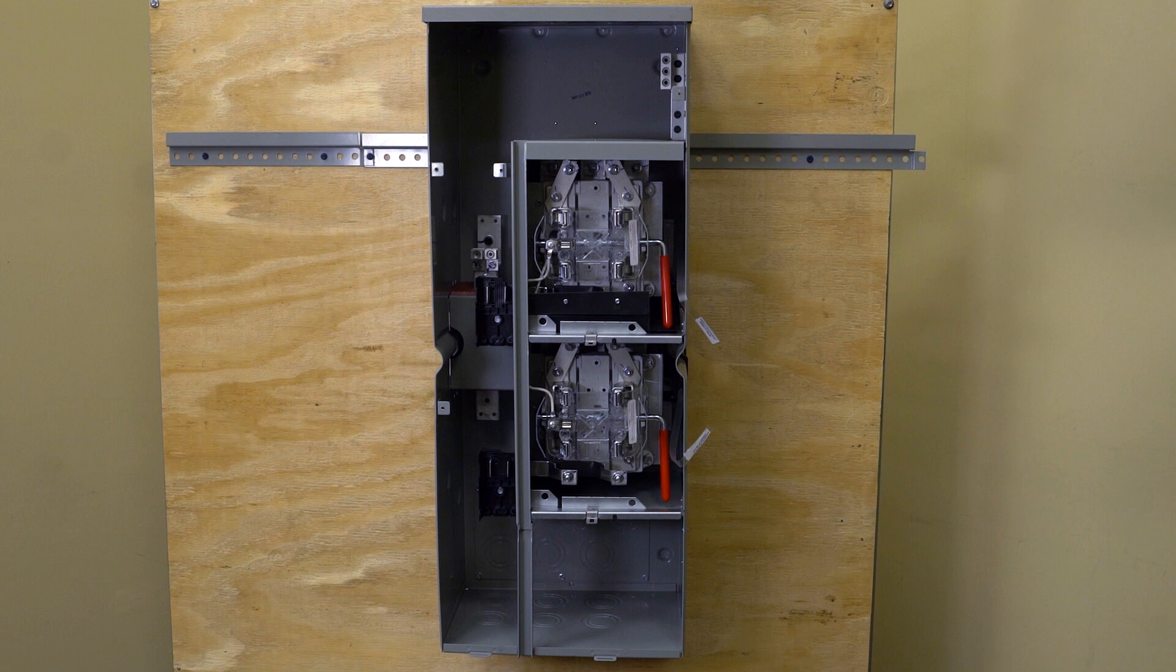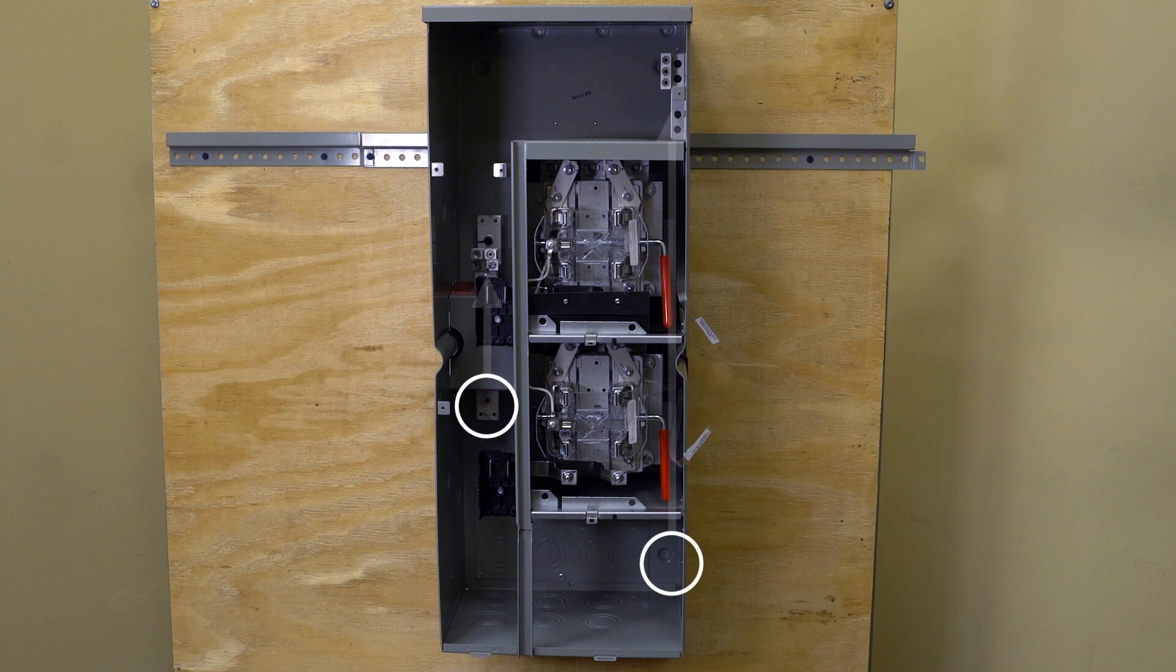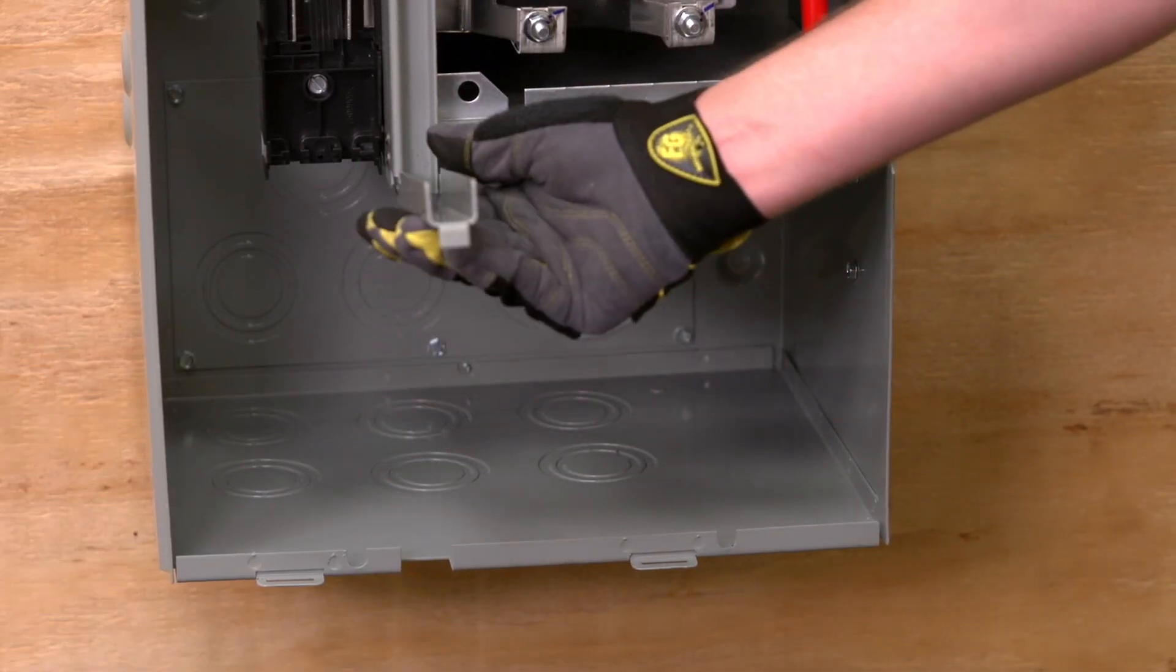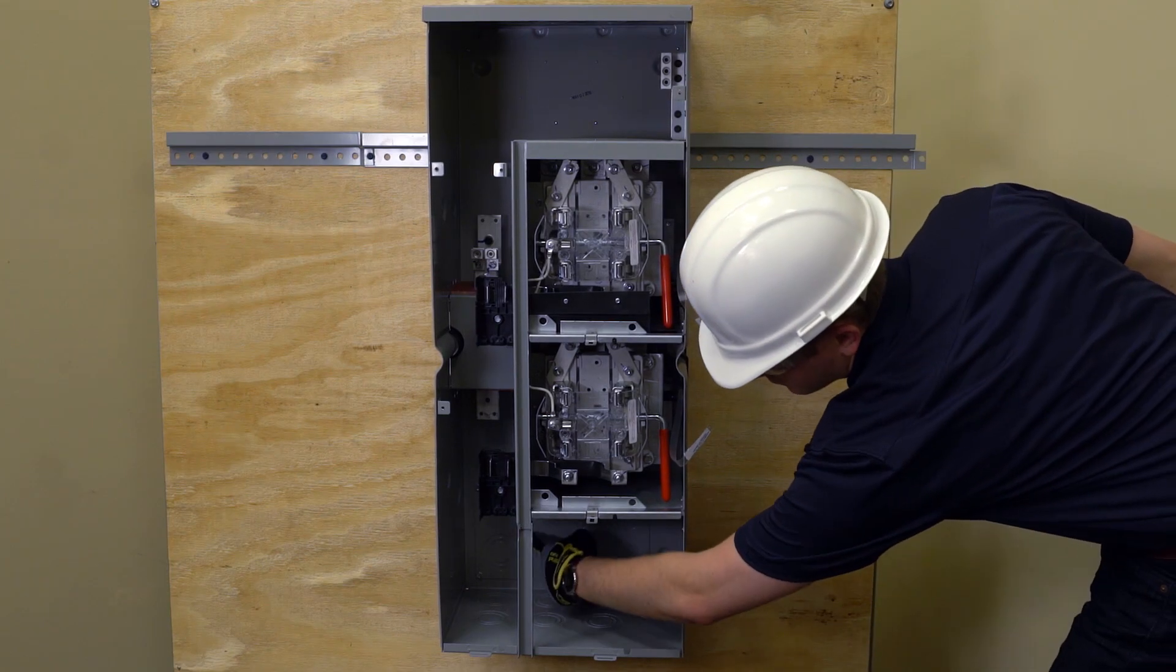Siemens 125 amp rated lever bypass meter stacks are very similar to their non-lever bypass stack counterparts. The neutral and ground lugs can be moved from the lower to upper positions, there is a pivoting rain gutter to increase working space, and the back plate is removable among other features.